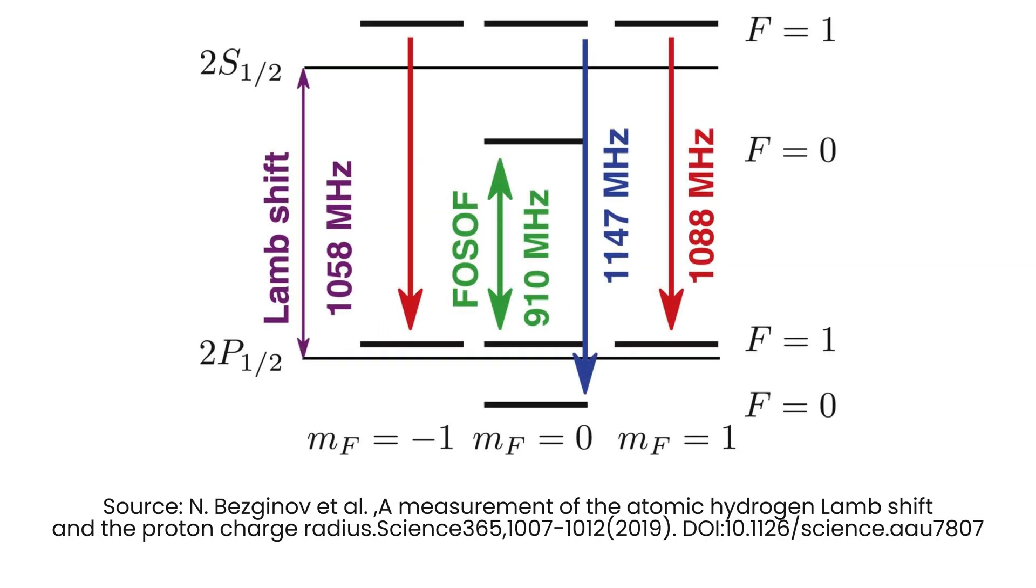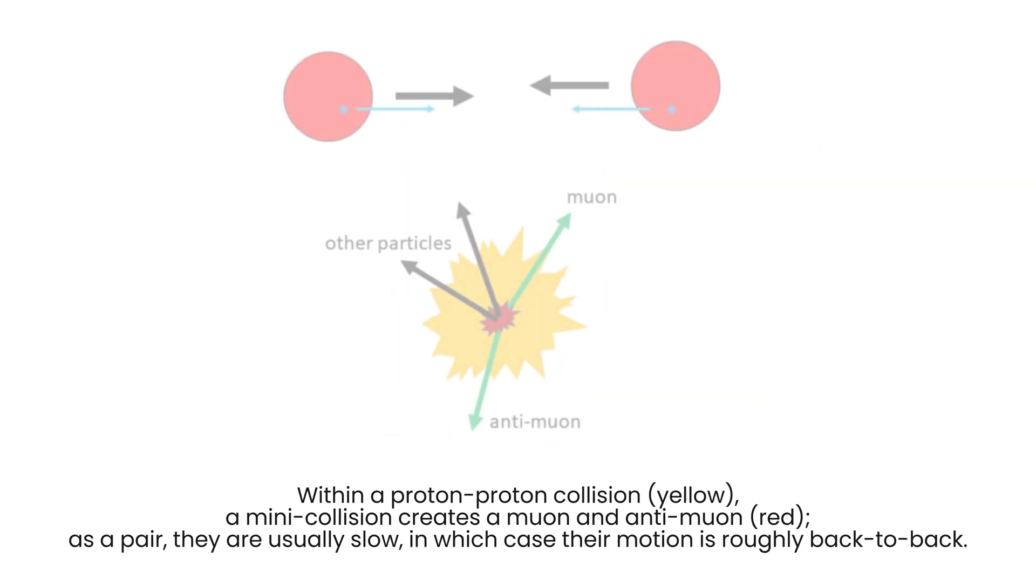The rich tapestry of quantum fluctuation extends beyond theoretical constructs to practical consequences in the laboratory. For instance, in particle physics experiments, virtual particles contribute to the self-energy of particles like electrons and muons.